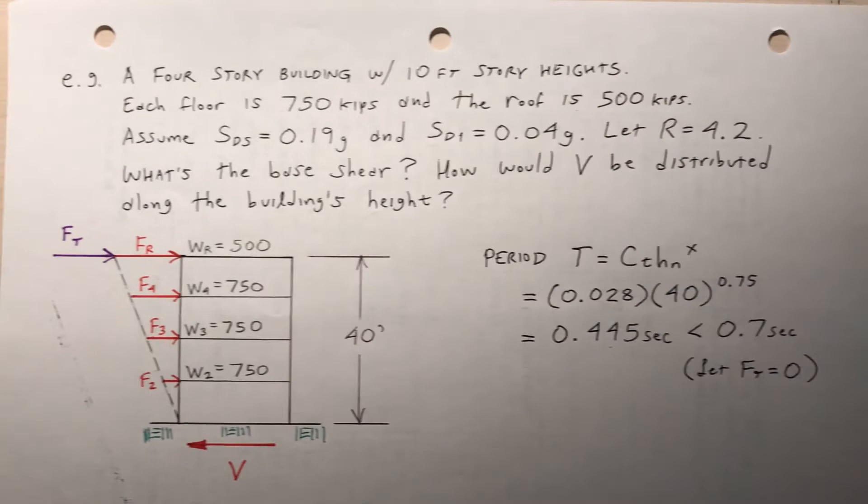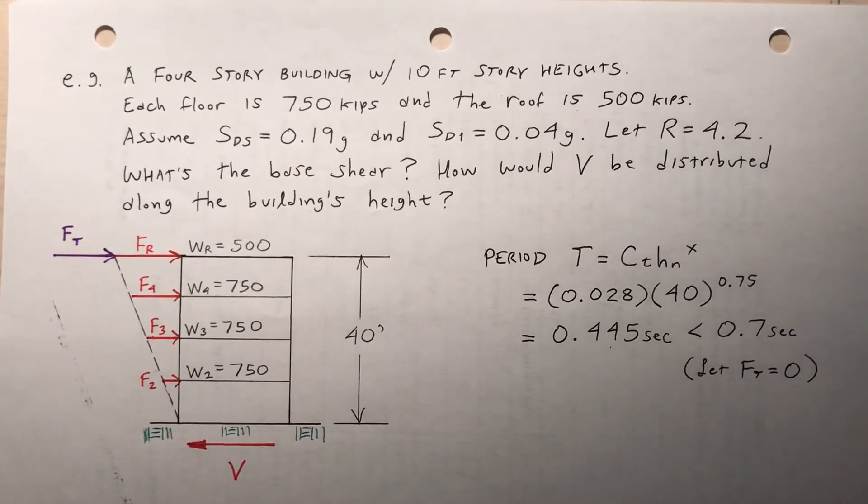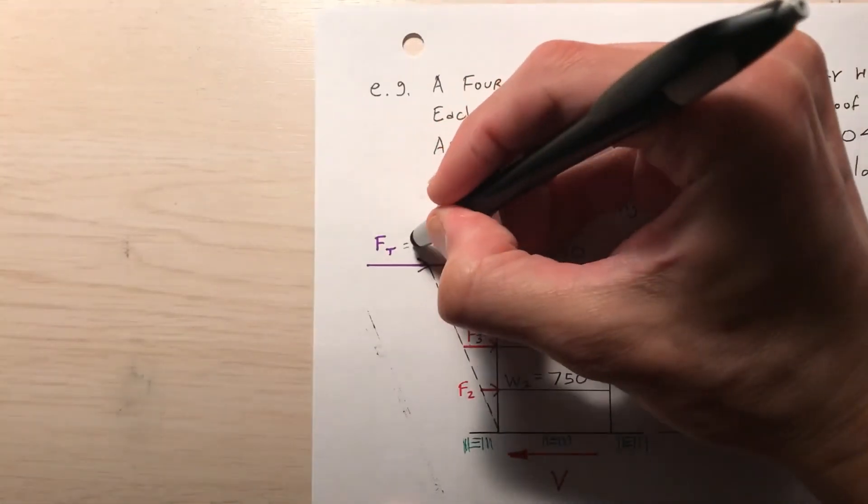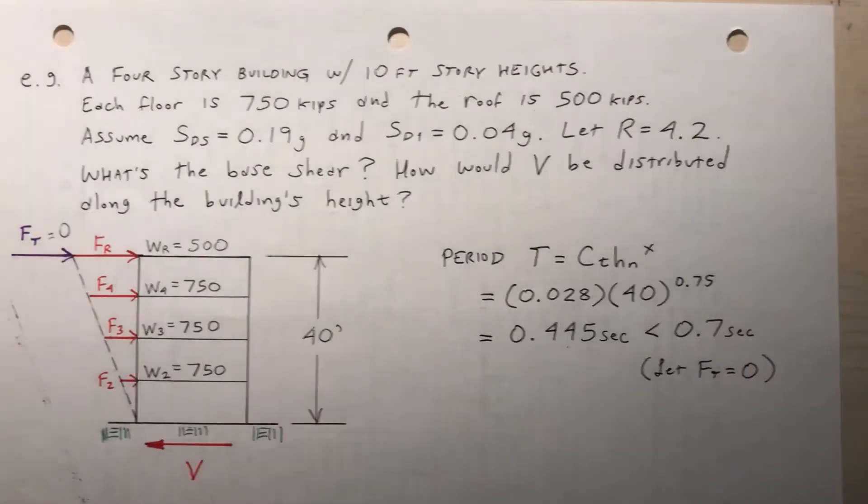So I calculate the period, period C_T times H_N to the X power. C_T, I'm assuming 0.028 for steel, the height 40 feet, and then raised to the power of 0.75. X is equal to three fourths for steel, I'm assuming in this case. So I'm getting a period of 0.445 seconds, which is less than 0.7 seconds, meaning that I can set F_T equal to 0. So over here, the top force is 0.